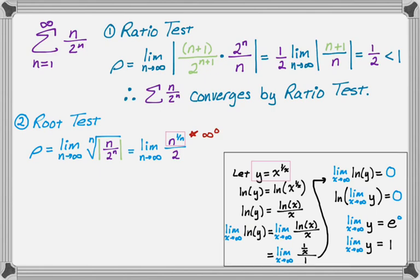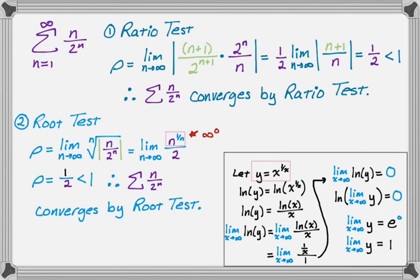Let me box off that extra work. So rho has reduced down to 1/2. This might have been a worse choice than the ratio test, because with the ratio test I was done almost instantly, and here I had to do this whole extra sub-problem. But I get one half, that's less than one, which means our series converges by the root test. If I had chosen the root test, I'd still show convergence — just with a bit more work.